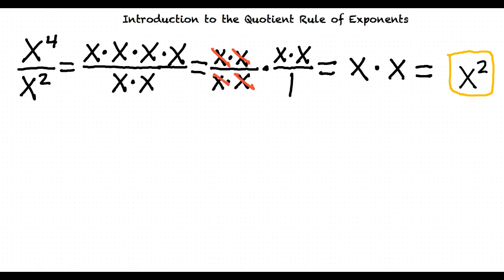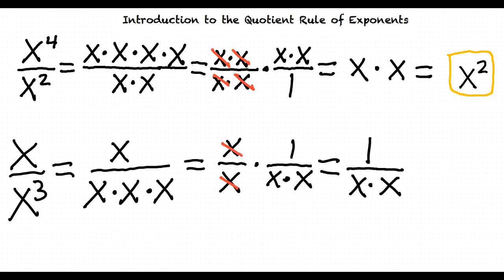For this problem, we will be simplifying x over x to the third. We write it as x over x times x times x. Now we can cancel the same amount of x's in the numerator and the denominator, which leaves us with 1 over x times x. This can be put into exponential form to make 1 over x squared.